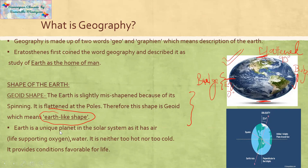Why is Earth a unique planet? Because there is air — the oxygen that we breathe in — which is important for life. The second necessity is water. And the third thing is it is neither too hot nor too cold. The climate is such that human beings can survive. So all the conditions are favorable for life on Earth.